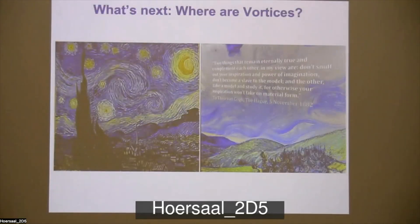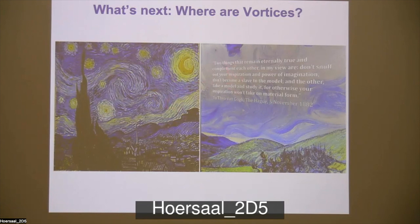All right. So the big question of where are the vortices thus far? We haven't seen the evidence except for one experiment from Elie Zeldov months ago. I think I would say almost an ingenious experiment that they've seen signatures. But when I was at the exhibit in Milwaukee for Van Gogh, I found this quote by him in his letter to his brother, which I feel is ideal for physics. It's just brilliant. He says the two things that remain eternally true and complement each other. In my view, are don't snuff out your inspiration and power of imagination. Don't become a slave of the model. On the other hand, take a model and study it for otherwise your inspiration won't take a material form, which I feel is really true. I mean, we need models. But then sometimes we need to throw away and get wild with some ideas and come back with models.